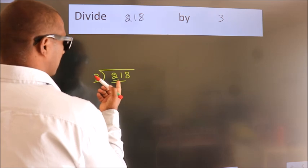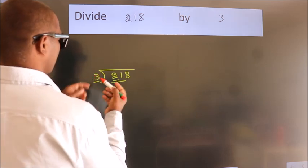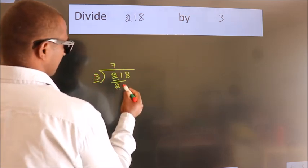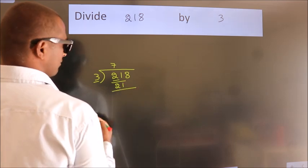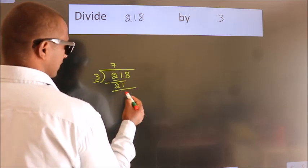When do we get 21? In 3 table. 3 7's 21. Now we should subtract. We get 0.